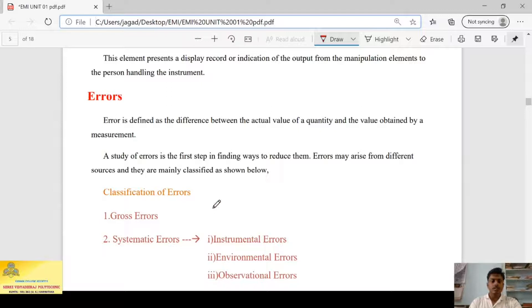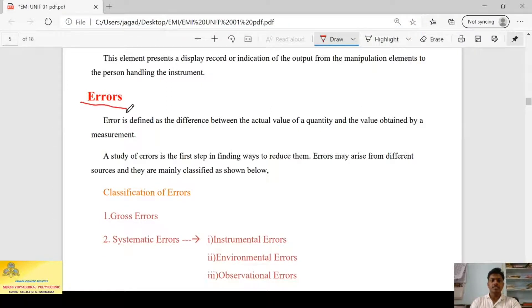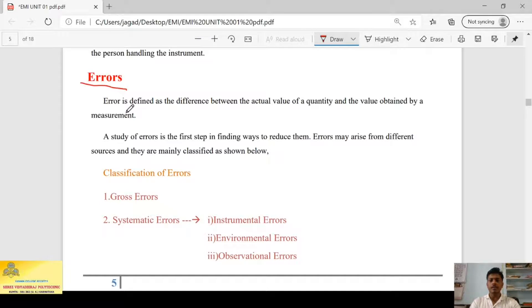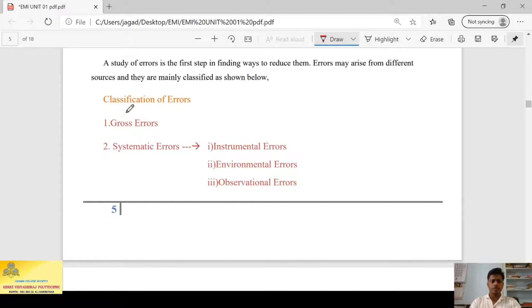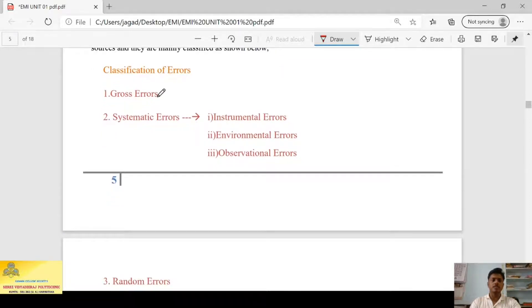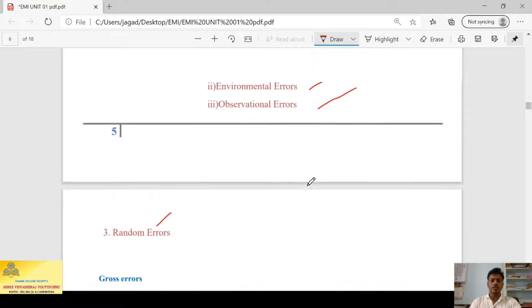Next, we have errors. Error can be defined as the difference between the actual value of the quantity and the value obtained by measurement. So the difference between the actual value and measured value is an error. There are basically three main classifications of errors: gross error, systematic error, and random error. In systematic error, there are three subclassifications: instrumental error, environmental error, and observational error.